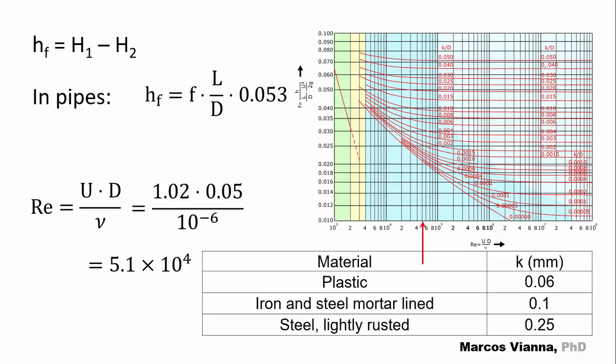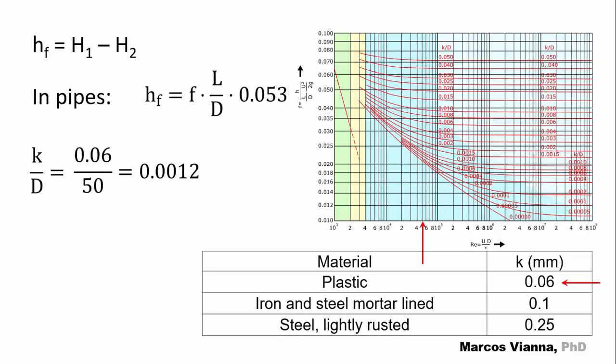Here it is in the Moody diagram. Now we have to find the K over D relationship. K equals 0.06 millimeter for plastic pipes. So, K over D equals 0.0012.